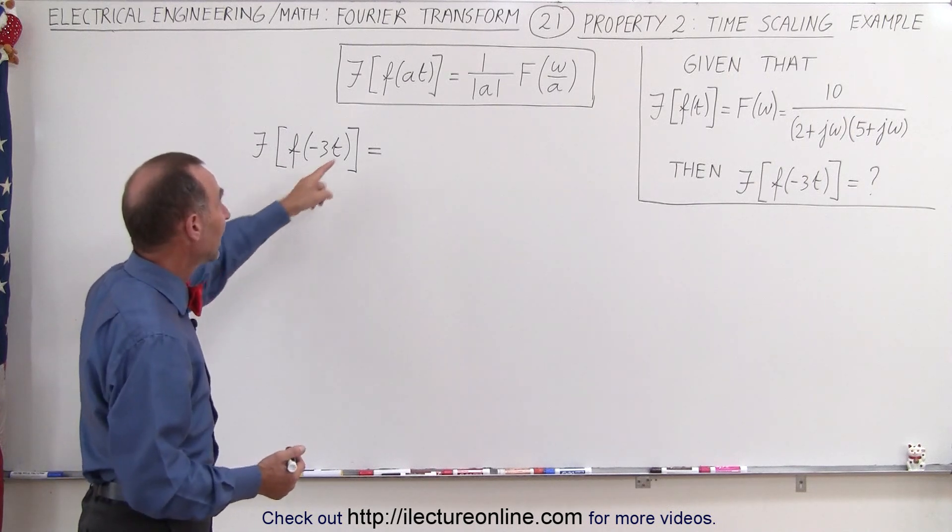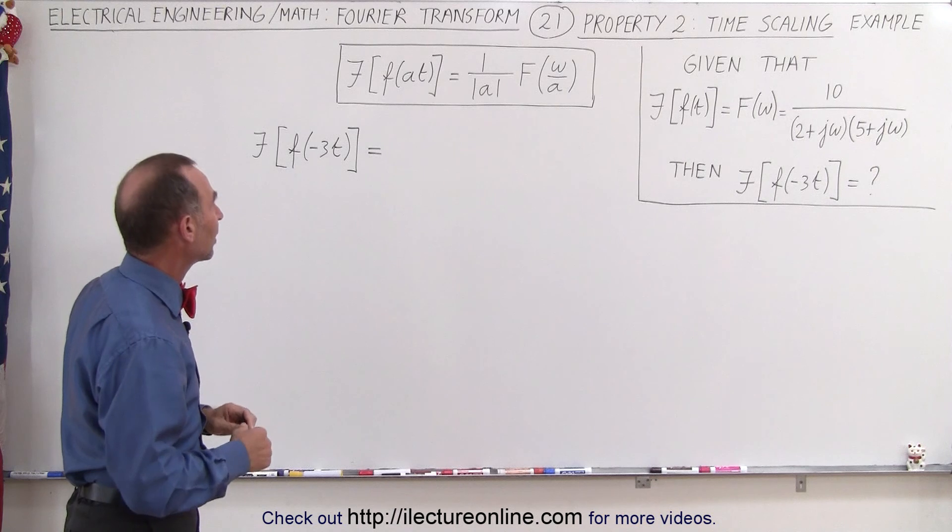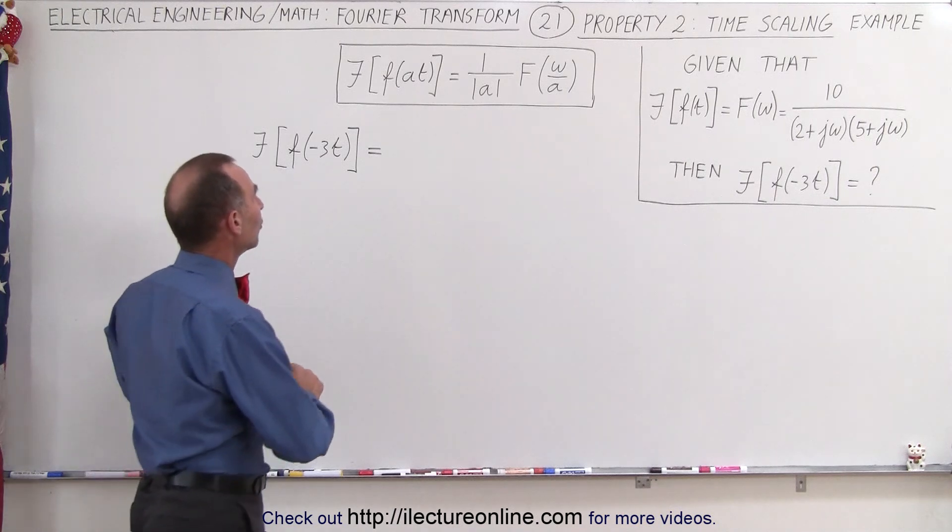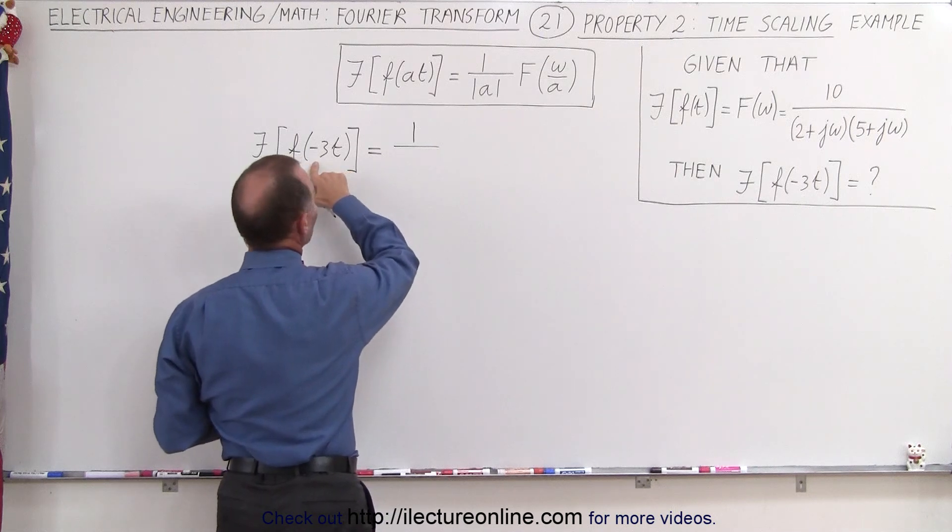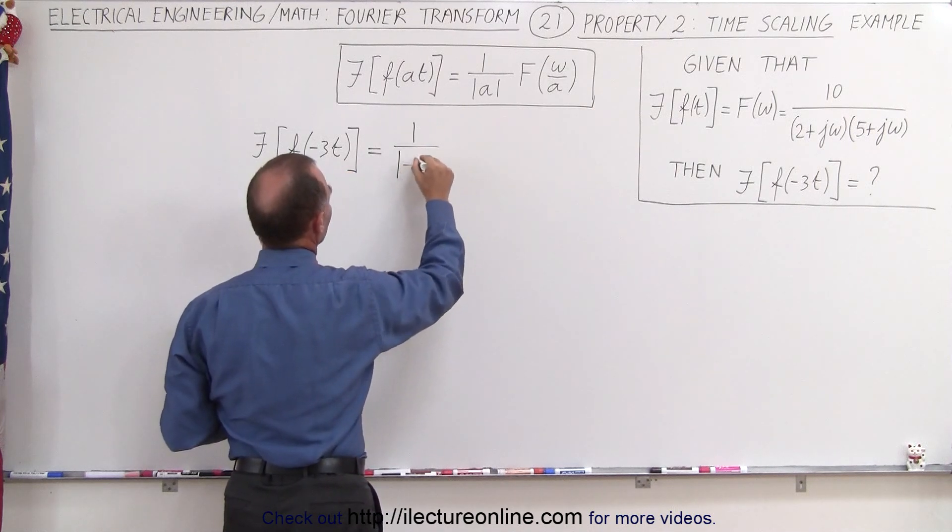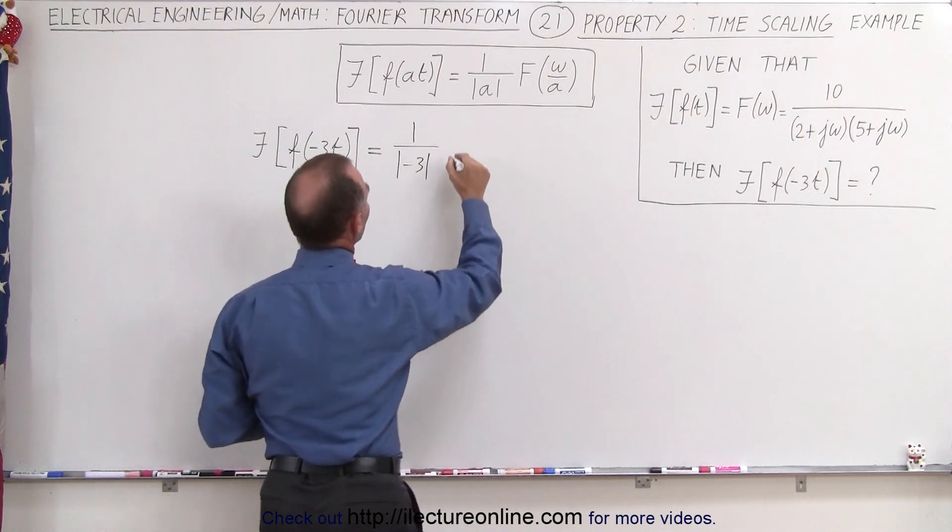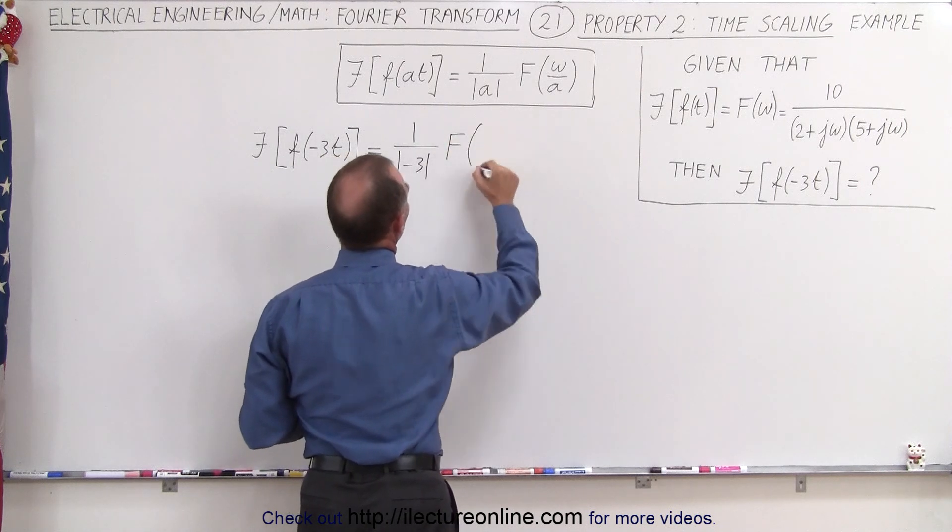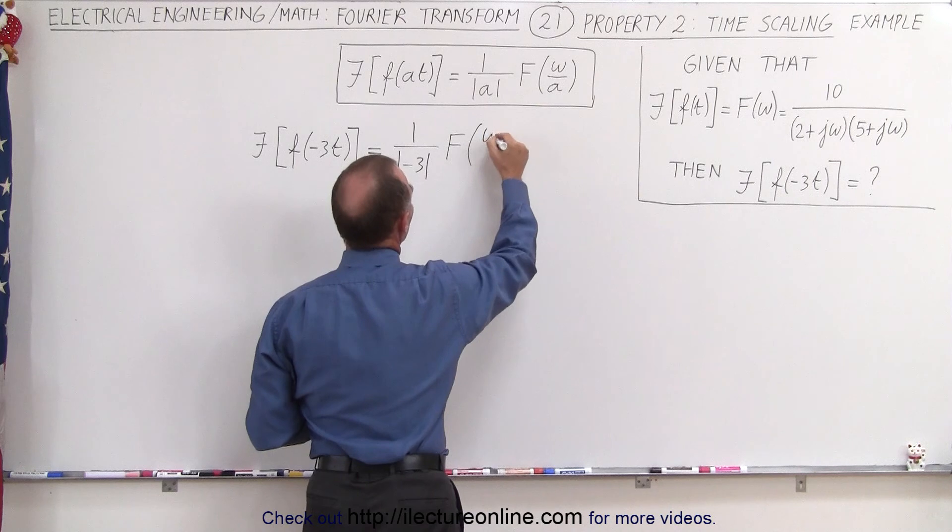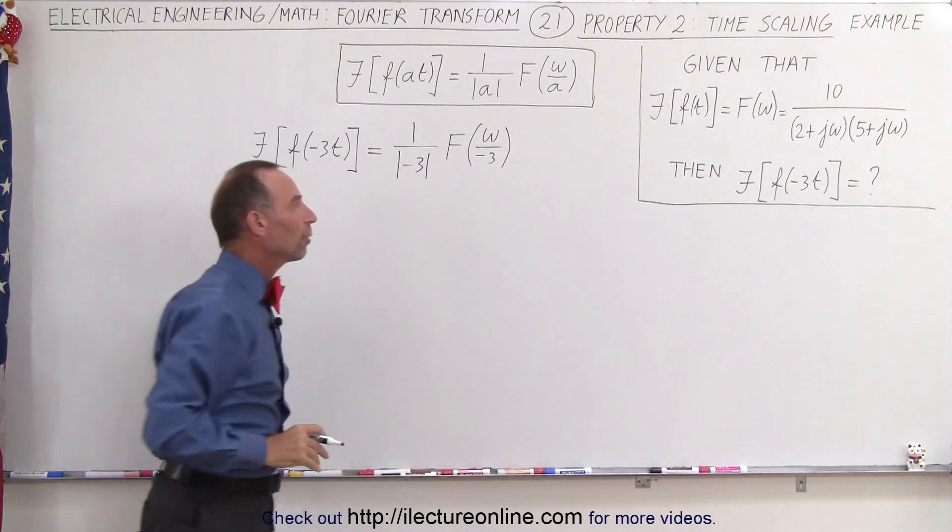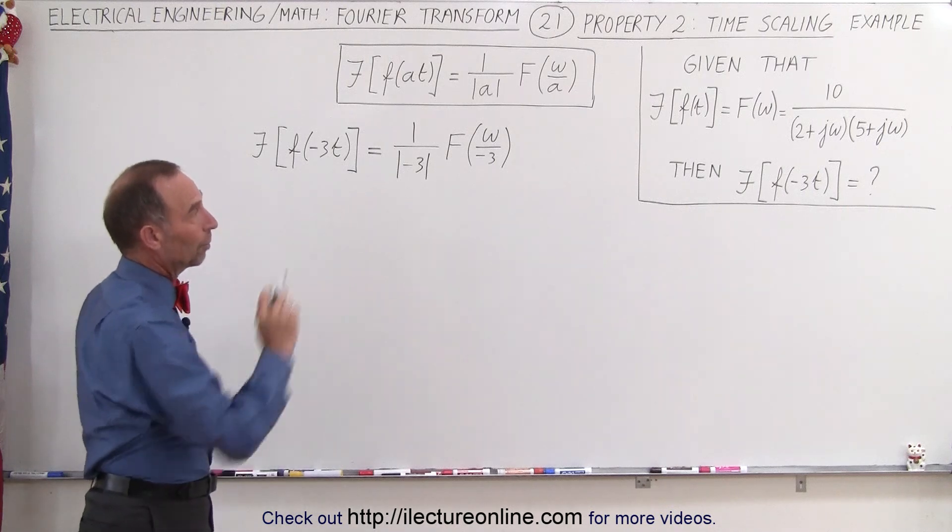We can simply take that and use our time scaling property which means that the Fourier transform will look like 1 over the absolute value of minus 3 times the Fourier transform where we're going to replace every omega by omega divided by a, in this case omega divided by minus 3. So that's the only change we have to make. Let's apply that to our problem right there.